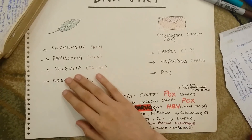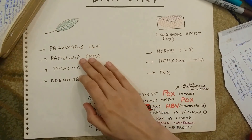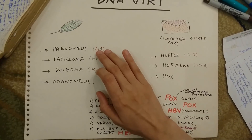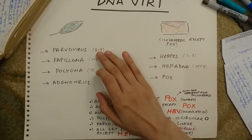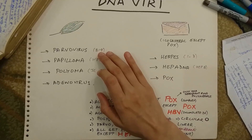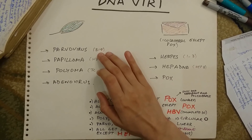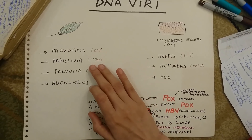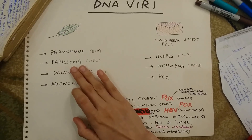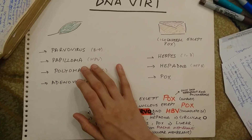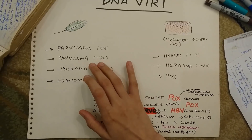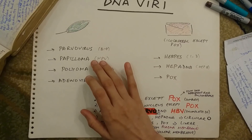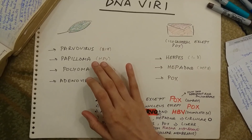Coming to the left side, we have the parvovirus, the papilloma virus, the polyoma virus, and the adenovirus. The parvovirus strain B19 is the one that's responsible for erythema infectiosum or fifth disease. It also causes aplastic anemia in children with sickle cell disease. Then we have the papilloma virus, which we commonly know as the human papilloma virus. It causes cervical intraepithelial neoplasia, cervical cancer, and serotypes 1, 2, 6, and 11 are responsible for warts.